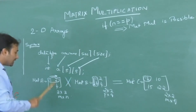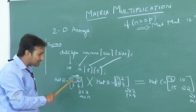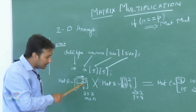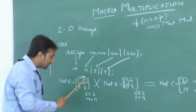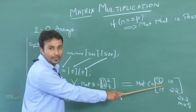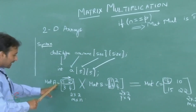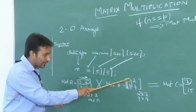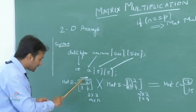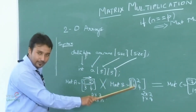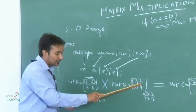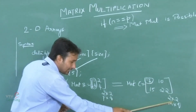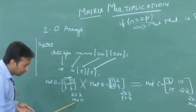If this condition holds good, then only we can say that matrix multiplication is possible, else matrix multiplication is not possible. After the condition is verified, the multiplication takes place from the first row multiplied with the first column of the second matrix, and the result is stored element by element. For example, the first row of matrix A is 1 and 2, and the first column of matrix B is 1 and 3. The multiplication is 1×1 + 2×3 = 7, which is the very first element in matrix C. The resultant matrix will always be in the form of M cross Q.